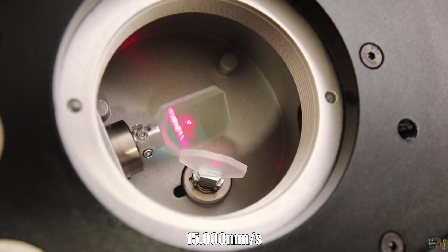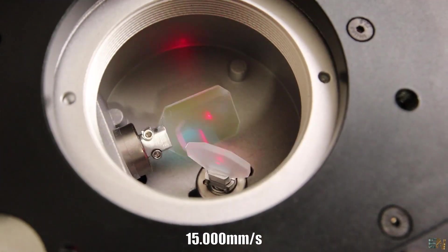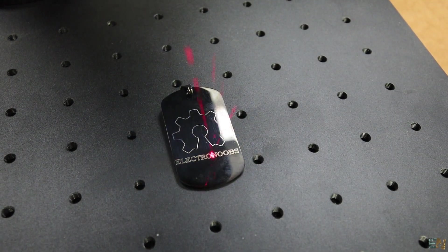Thanks to the galvo actuator system, the engraving speed could reach up to 15,000 mm per second, which is impressive. Engrave in just a few seconds.